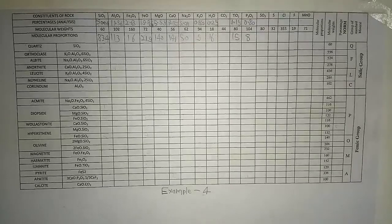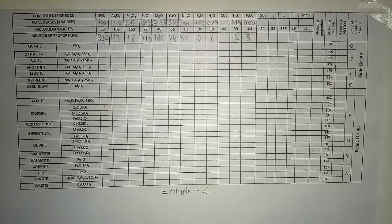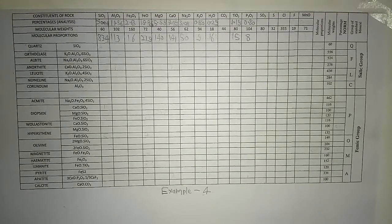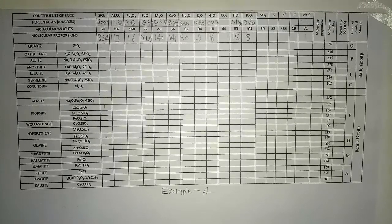This is Example Number 4 and here I have written the percentage analysis. The percentages of the CFW non-norm compounds are: 50.04, 11.56, 2.63, 15.76, 5.58, 7.89, 3.08, 0.89, 0.29, then TiO2 is 1.19, and P2O5 is 0.80.